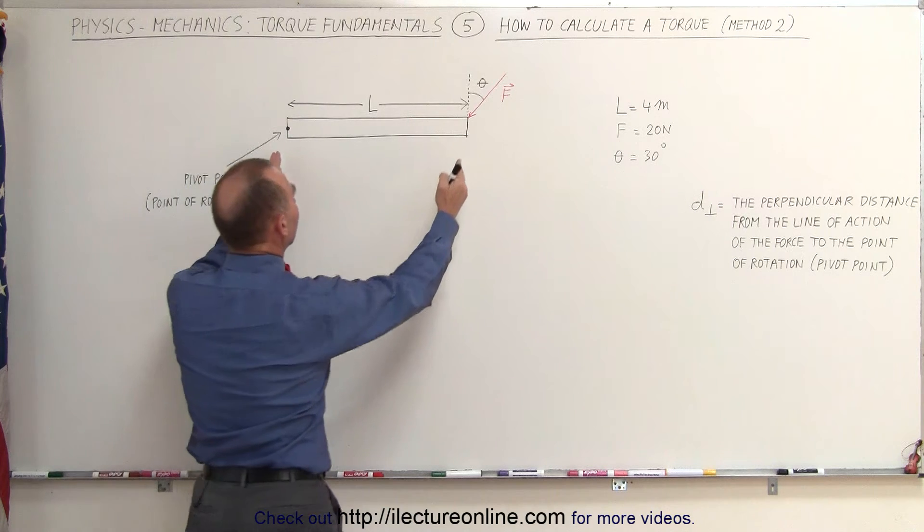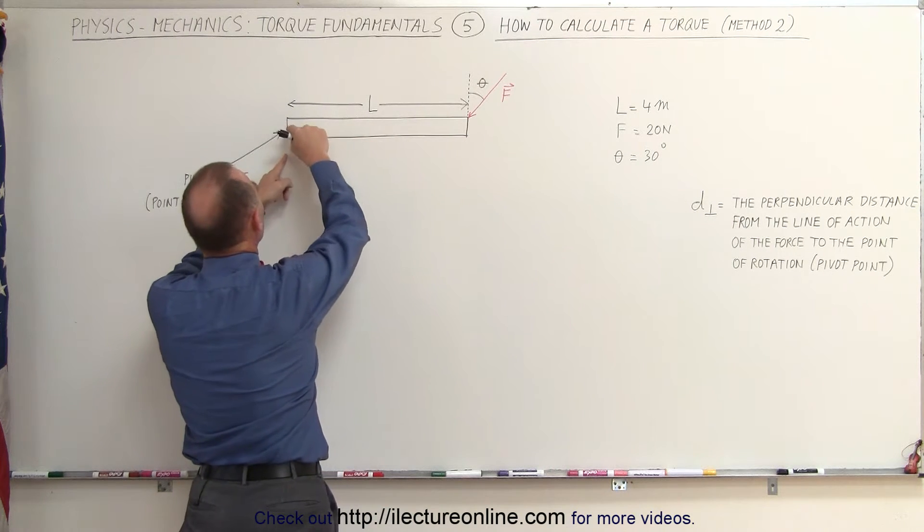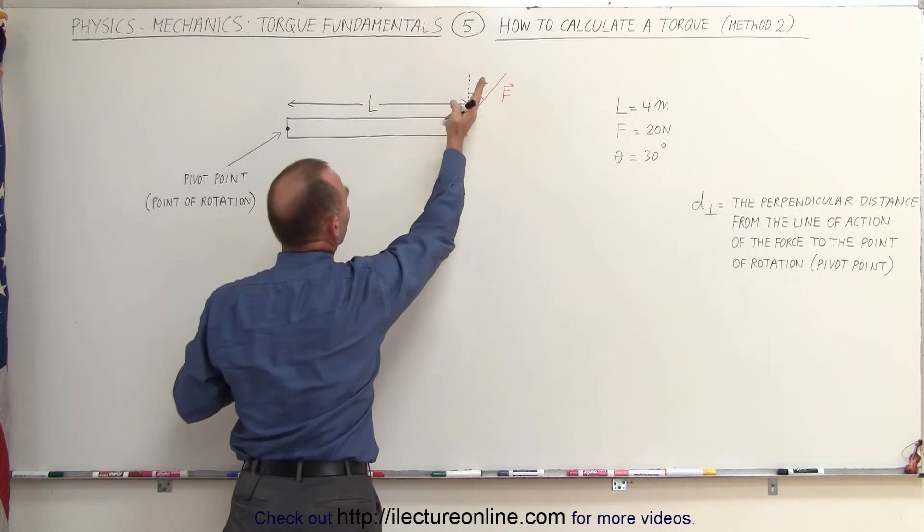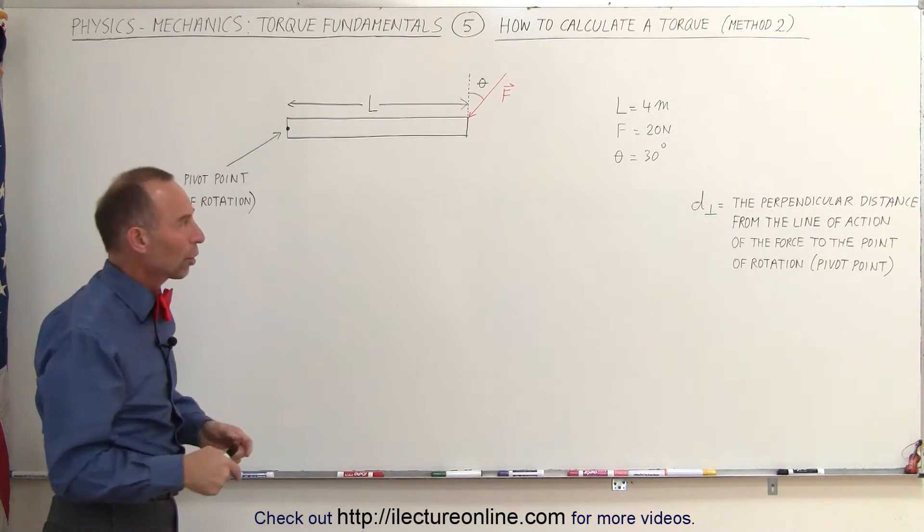Again, we have an object that has a length L, is attached at one end so that it can pivot or turn about that point, and a force at the other end is applied, which then causes a torque.